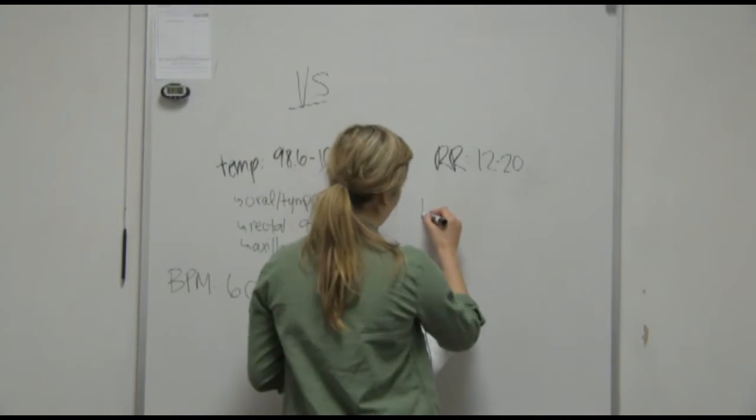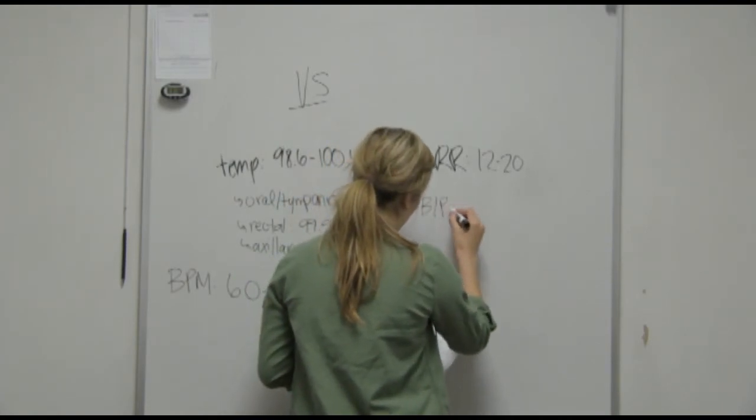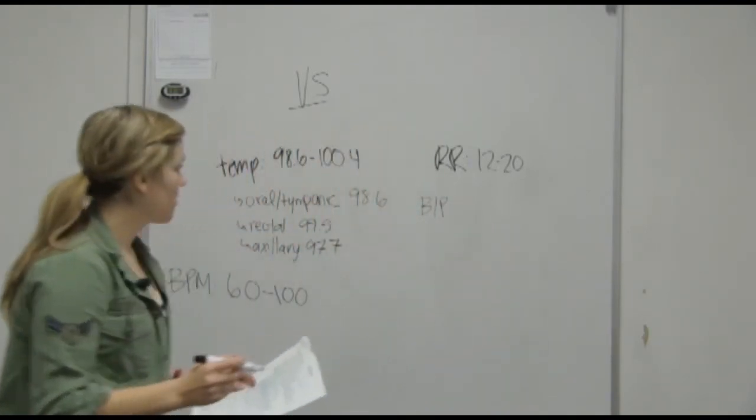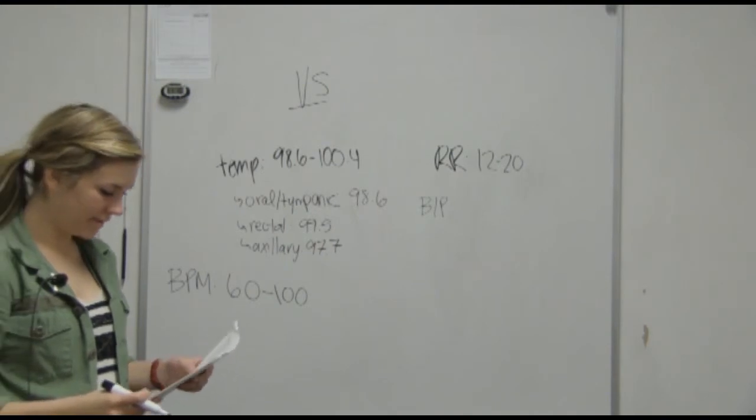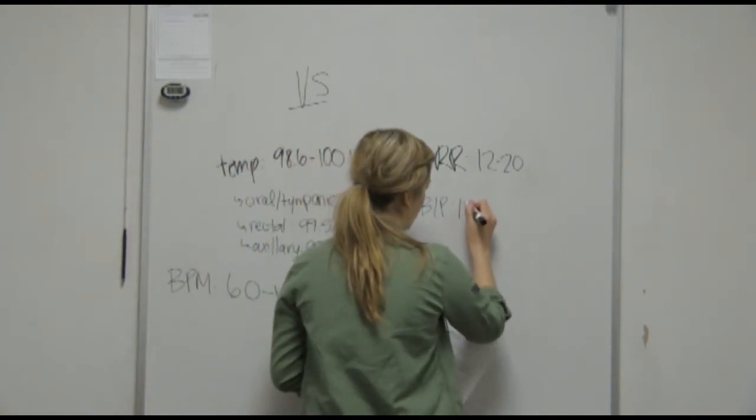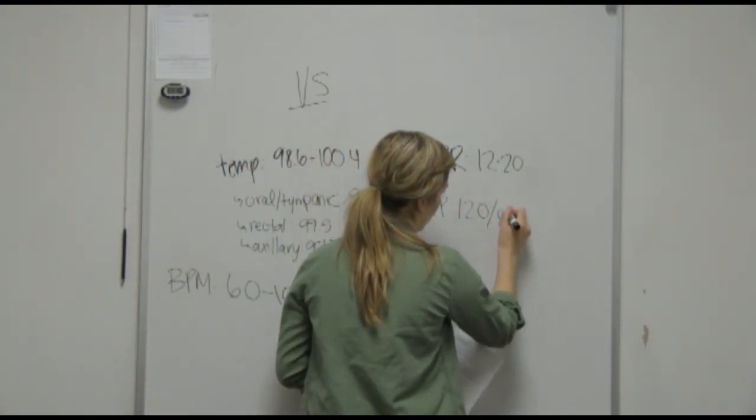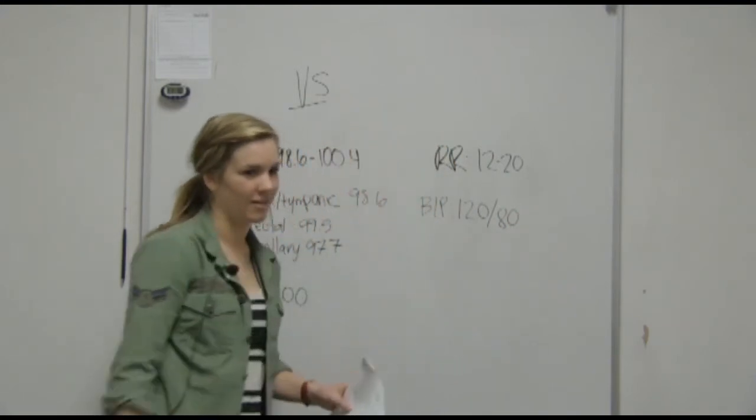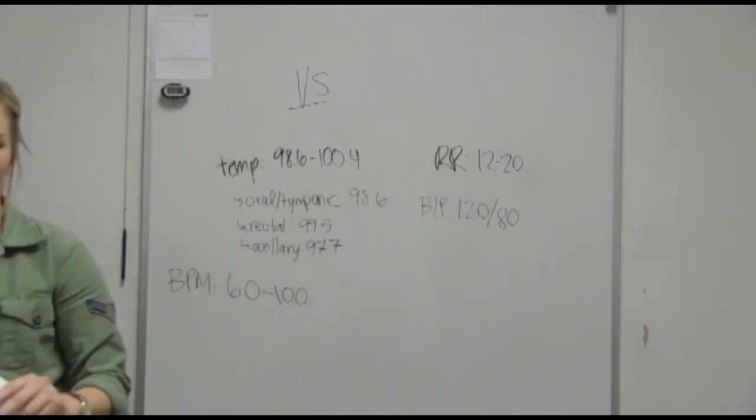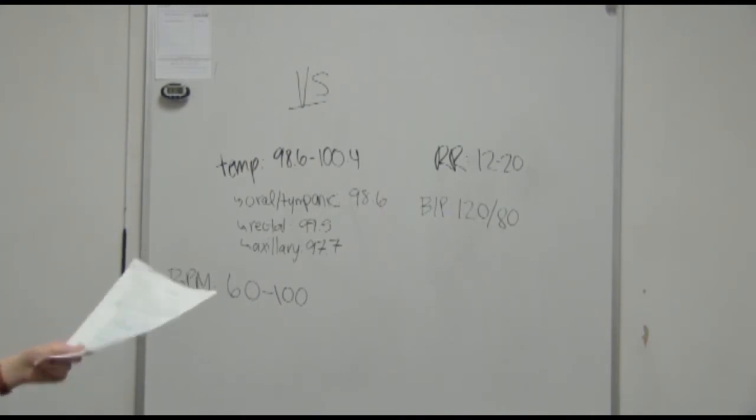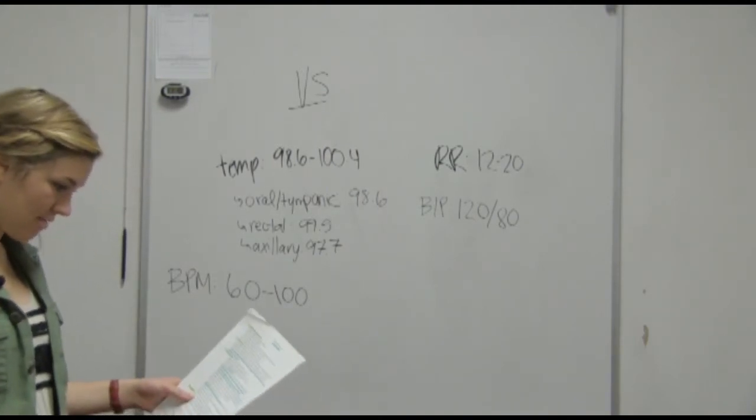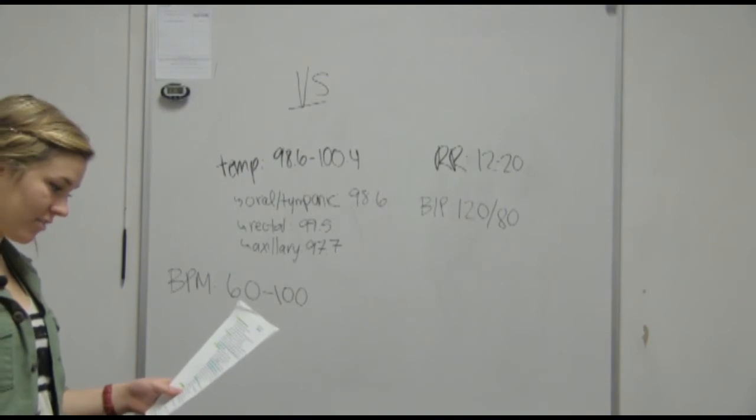So what is the normal for blood pressure? It's 120 over 80. Perfect. So I'm sure as you're doing your 20 assessments, you're like 'oh, you're hypertension.' And so that's when you use hyper and hypo too. Hypertension is higher. Hypotension is lower. And a lot of our people in our society are hypertension, just with the high cholesterol and everything.